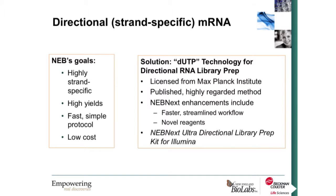As far as NEB's goals in making this directional or strand-specific mRNA kit, they wanted to produce high strand specificity, high yields, a fast and simple protocol, and low cost. They used a dUTP replacement strategy, which they have licensed from the Max Planck Institute. It's a published and highly regarded method, and their kit enhancements include a faster streamlined workflow and novel reagents, resulting in the NEBnext Ultra Directional library prep kit for Illumina.